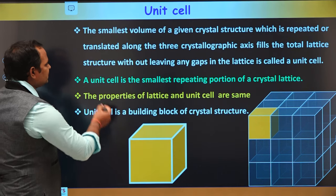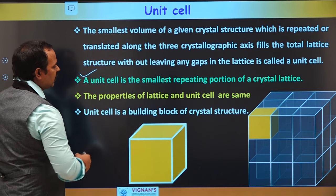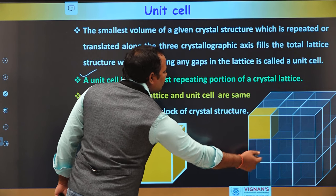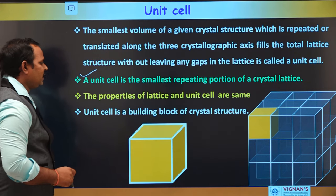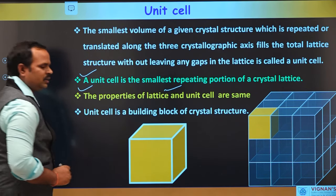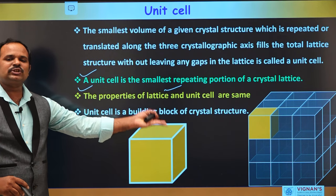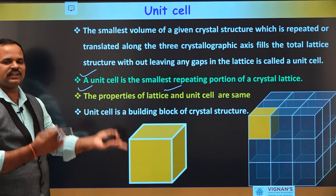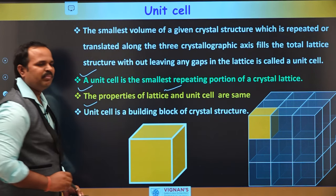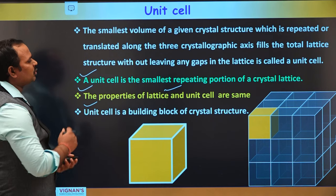The unit cell is the smallest volume which can be repeated to give the properties of the entire crystal. Also, the properties of the lattice and unit cell are the same. So when we repeat this unit cell along the x, y, z axes, we get the total crystal structure. The unit cell is also called the building block of the crystal structure.